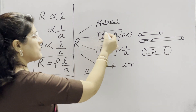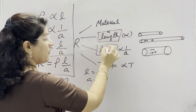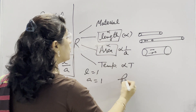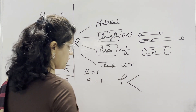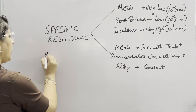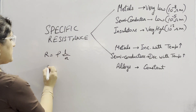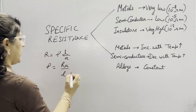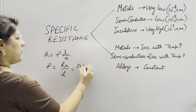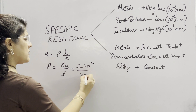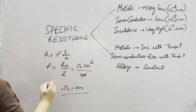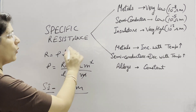Since length and area reduce to unity, resistivity depends on only two factors: material and temperature. For the unit of specific resistance, from R = ρL / A we get ρ = RA / L. The unit of resistance is Ohm, area is meter squared, and length is meter, so the SI unit of specific resistance is Ohm·meter.